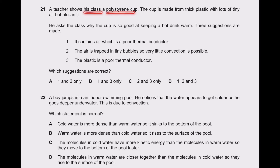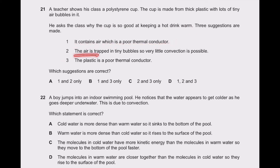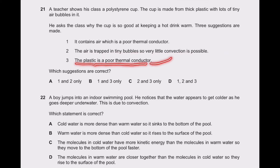Question 21: a teacher shows a polystyrene cup — thick plastic with lots of tiny air bubbles. Why is it good at keeping a hot drink warm? It contains air which is a poor thermal conductor; the air is trapped in tiny bubbles so very little convection is possible; and plastic is a poor thermal conductor. All three suggestions are suitable, so option D is correct.